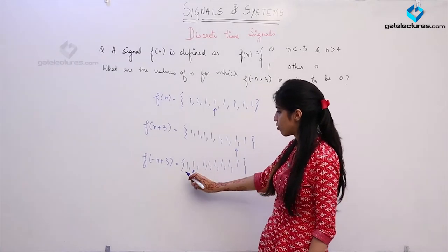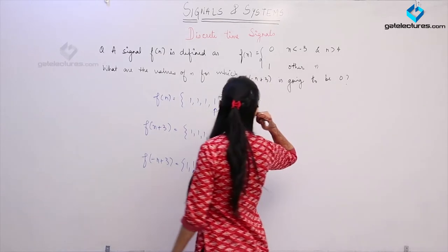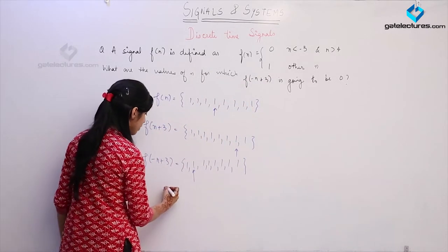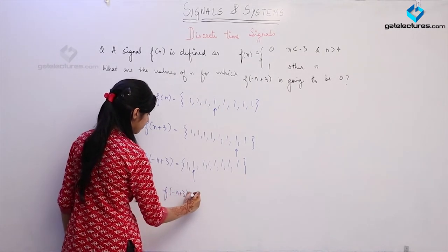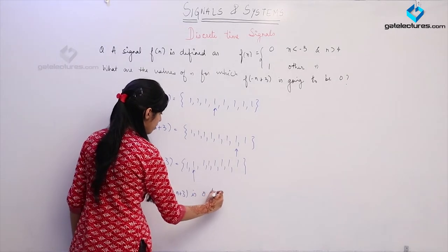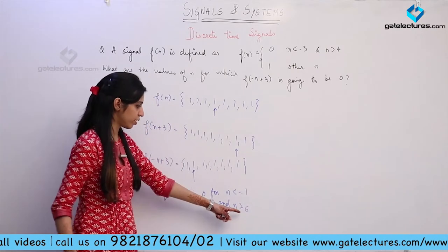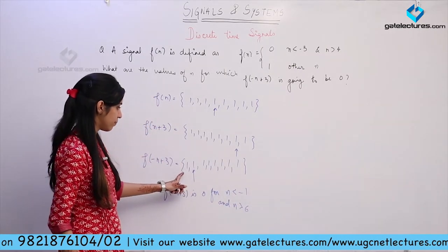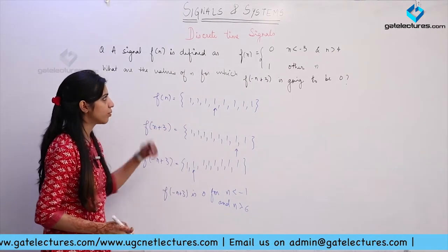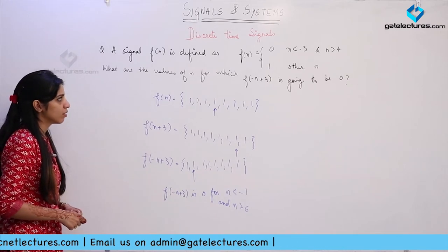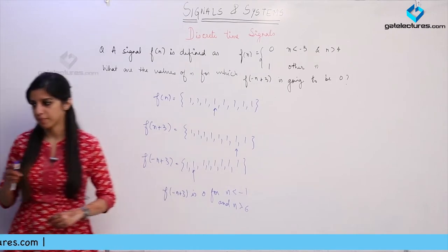This function is having values from n = -1 to n = 6. So f(-n+3) is 0 for n less than -1 and n greater than 6. I am not putting an equal-to sign here because we are having samples at -1 and 6. This is how you are going to get questions from this topic — here is one more question we can see.